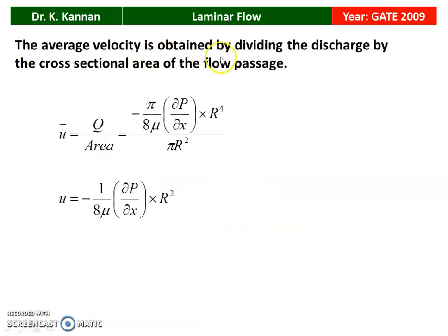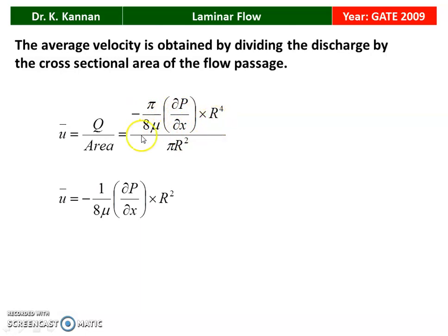Average velocity is obtained by dividing the discharge by the cross-sectional area. So ū = Q/A. With Q = −π/8μ · ∂p/∂x · R⁴ and area = πR², simplifying gives ū = −R²/8μ · ∂p/∂x. That is the answer.